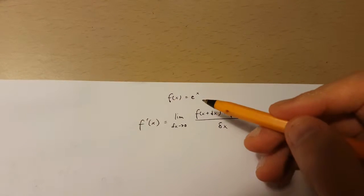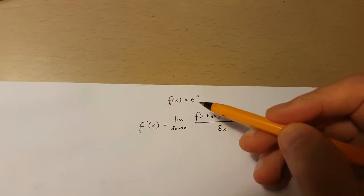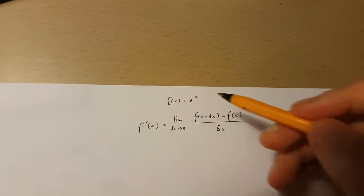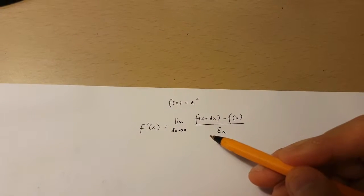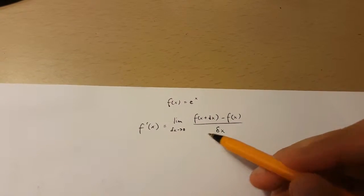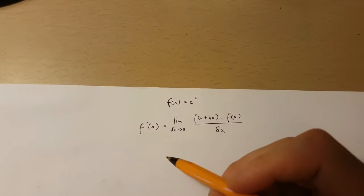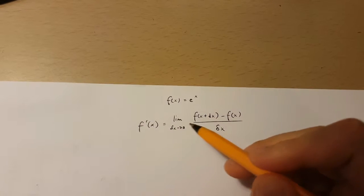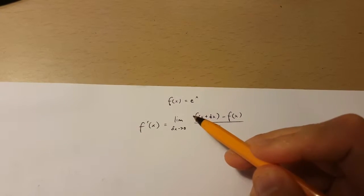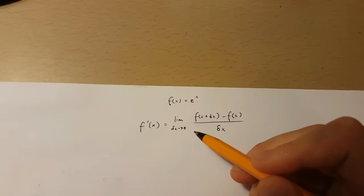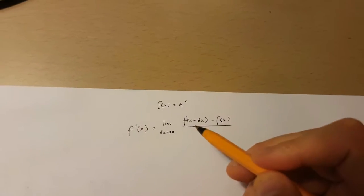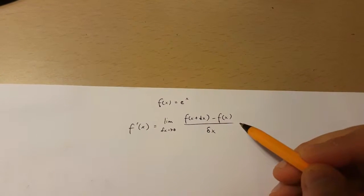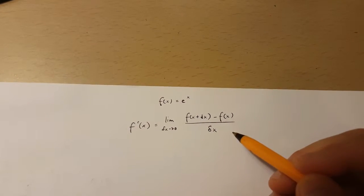Hello, in this video I'm going to be showing you how to find the derivative of e to the power of x using this formula over here. This formula tells us that the derivative of the function of x is equal to the limit as change in x approaches 0 of the function of x plus change in x minus the function of x over change in x.